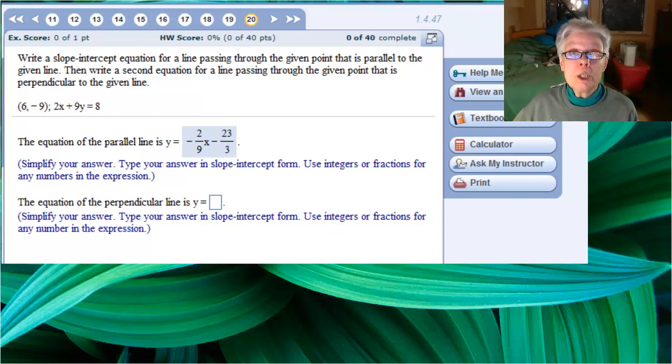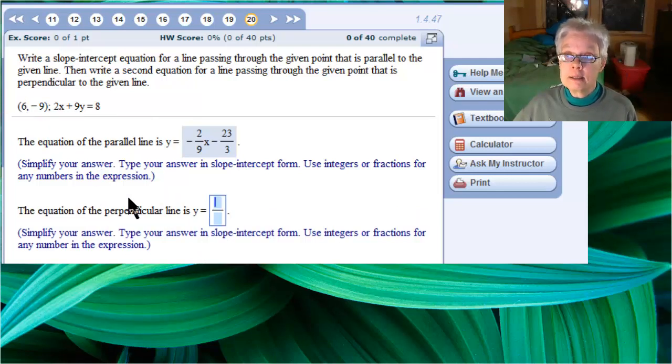That's our perpendicular equation. Now, put that in the answer box carefully. 9 over 2, right arrow, x minus 36. Check answer.